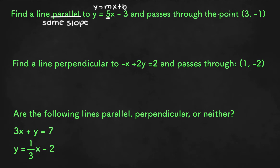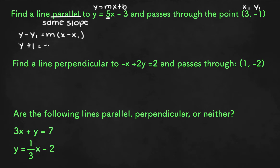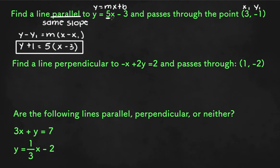We know the slope and we know a point that the line passes through. When we know the slope and a point of a line, we can write it in point-slope form, which is y minus y1 equals m times x minus x1. So if we plug in, we get y minus negative 1, or y plus 1, equals 5 times x minus 3. That would be the line parallel to y equals 5x minus 3 that passes through the point (3, -1).